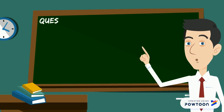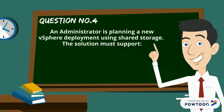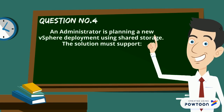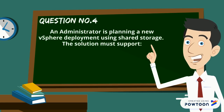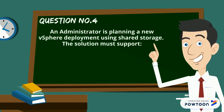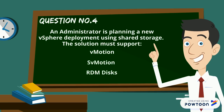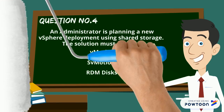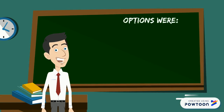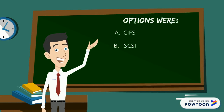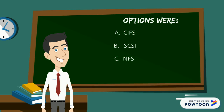Here is our question number 4. An administrator is planning a new vSphere deployment using shared storage. The solution must support vMotion, storage vMotion, and RDM disks. The options are CIFS, iSCSI, NFS, and vSAN.